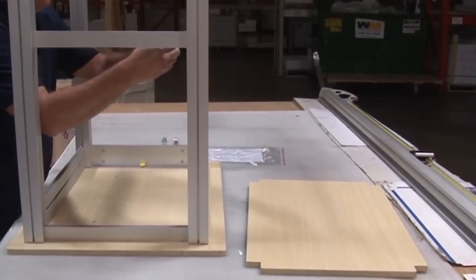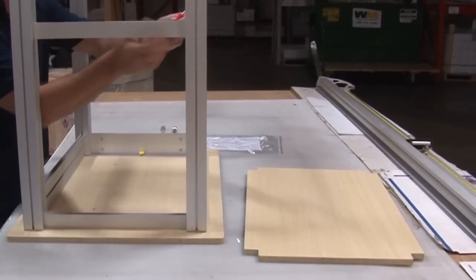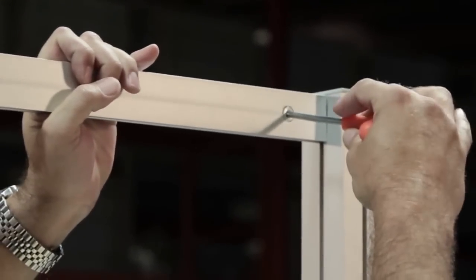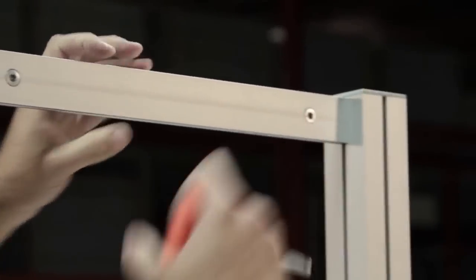Place two short crossbars halfway up the legs and lock in place. Place two long crossbars halfway up the legs and lock in place. Place the last two short crossbars at the bottom of the legs and lock in place.